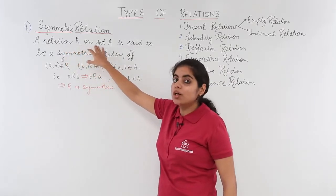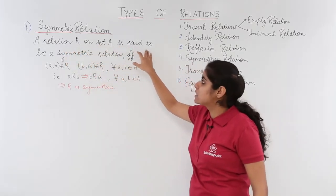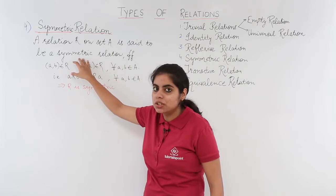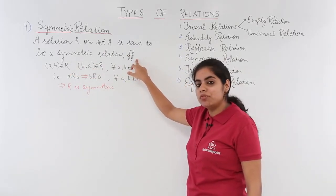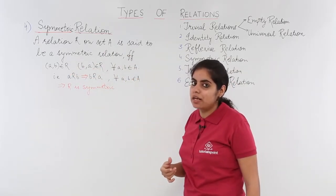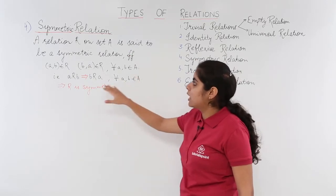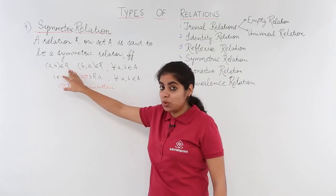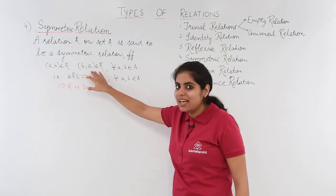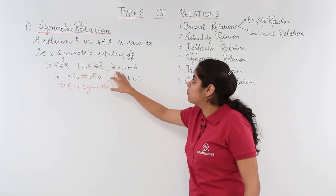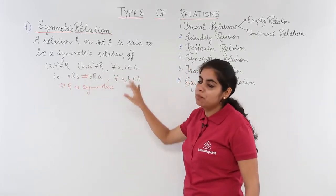A relation R on the set A is said to be a symmetric relation if and only if (a, b) belongs to R implies (b, a) belongs to R for every a, b belongs to A.